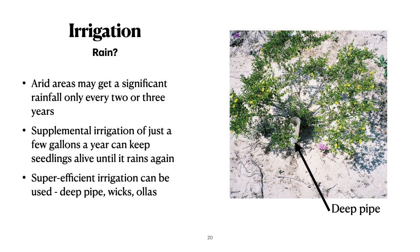What we would like to see is rain, but rain may not come except every two or three years or even further apart. So supplemental irrigation may be needed to keep our natural seedlings alive, or if we try to grow container plants, to keep container plants alive. There are a wide number of super-efficient irrigation systems that can be used — deep pipes, wicks, oyas, clay pots, leaky pipes, and other options for very low water use. Many of these plants would only get a few gallons a year, but it's enough to keep them alive — not growing, mind you, but alive until it finally rains.